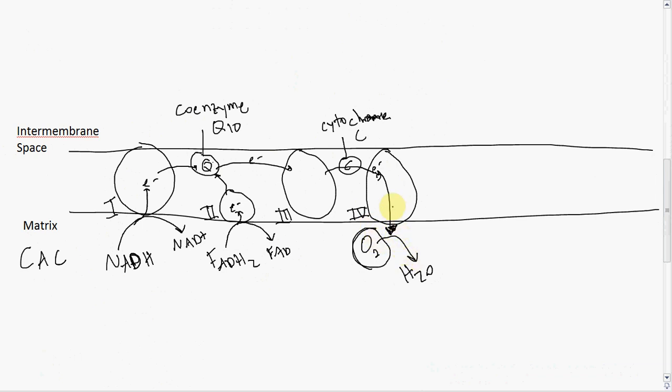We've got lots of electron transfer going on through all these complexes. You might be asking, who cares? The reason we're transferring all these electrons is because each time they're transferred, a little energy is released. We can harness that energy to pump out H+ ions. Complex 1 does that, complex 3 can do that, and complex 4 can do that too.